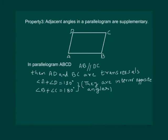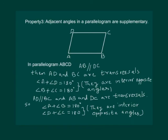And also angle B plus angle C is equal to 180 degrees, because both these angles are interior opposite angles. Similarly, in parallelogram ABCD, AD is parallel to BC. Then AB and DC will be the transversals. By the same property of parallel lines, interior angles will be supplementary. That means angle A plus angle B will be 180, and angle D plus angle C will be 180. Hence, properties of parallel lines have helped us prove that adjacent angles in a parallelogram are supplementary.